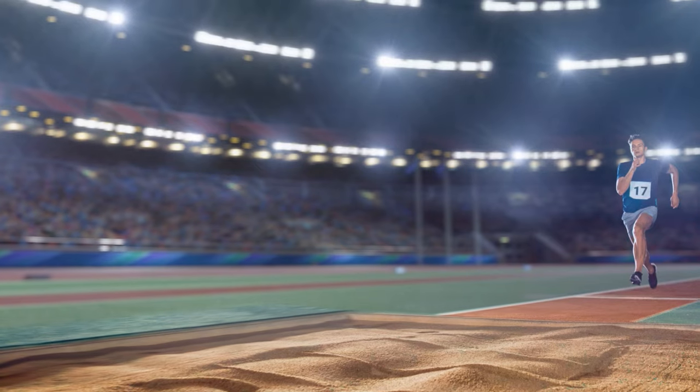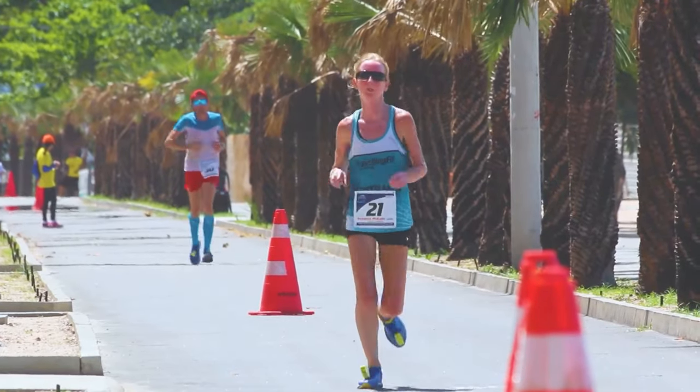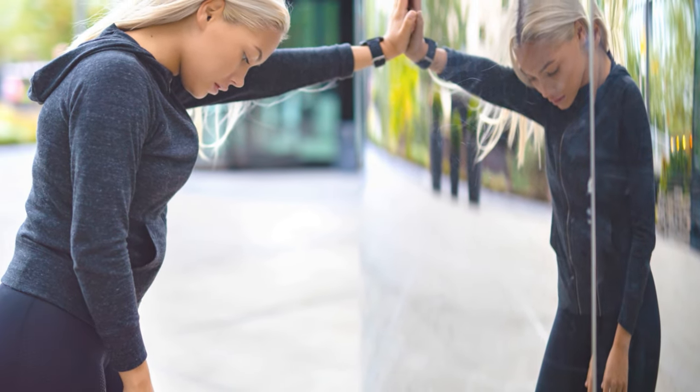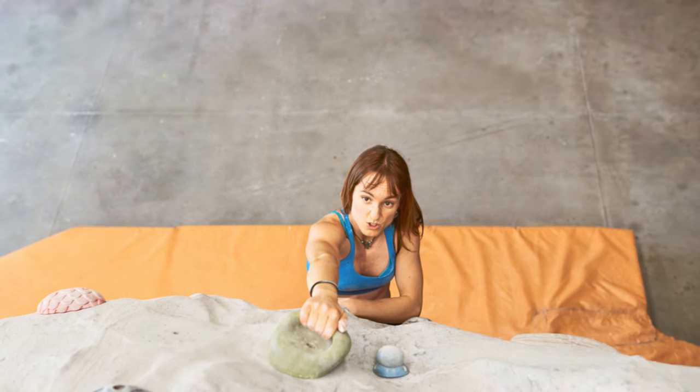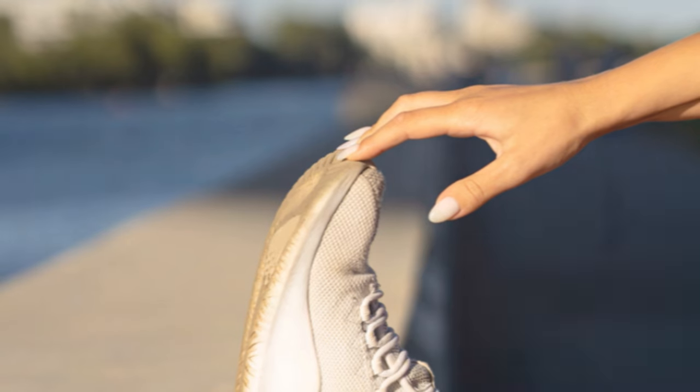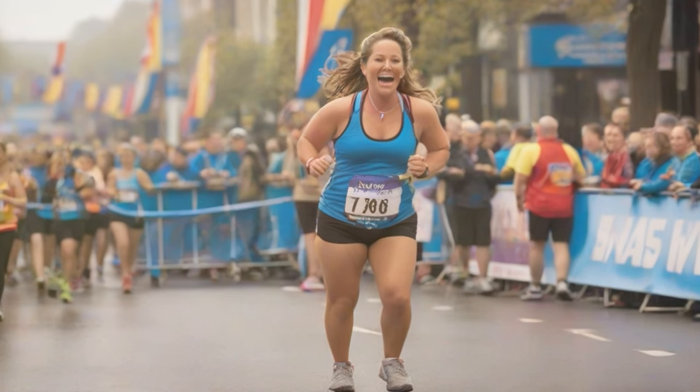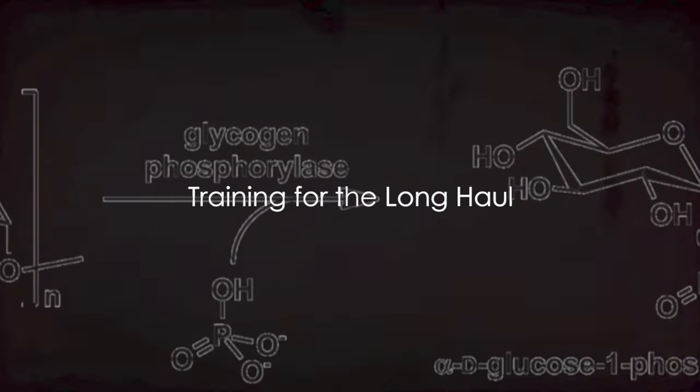Runners overcome this wall in several ways. Some slow their pace or take walking breaks. Others use mental strategies like breaking the remaining distance into smaller, manageable segments. For many, it's about digging deep, finding that internal motivation, and reminding themselves of why they're doing this in the first place. Nutrition also plays a crucial role. Consuming energy gels or drinks during the race can help maintain glycogen levels and delay the onset of the wall. Training too can help. Long runs in preparation for the marathon condition the body to better utilize fat as a fuel source, making the transition smoother. Overcoming the wall certainly requires a great deal of willpower, but is there a way to avoid hitting it altogether?